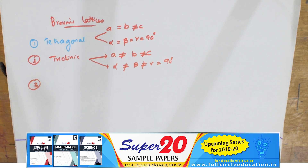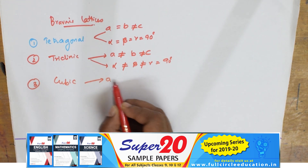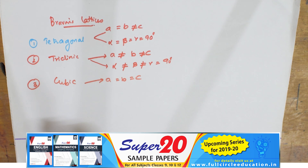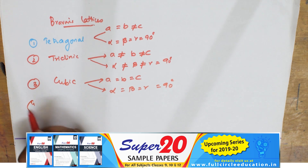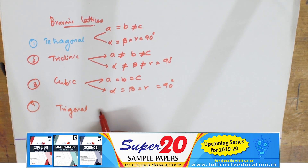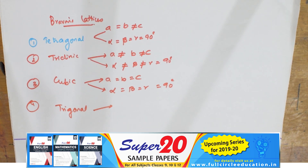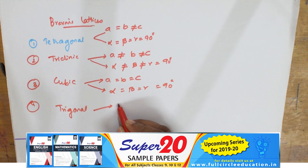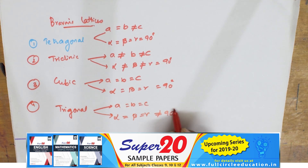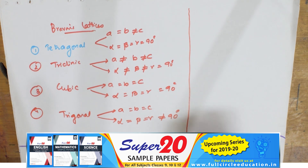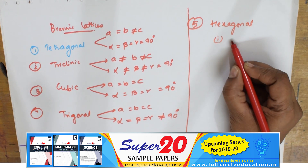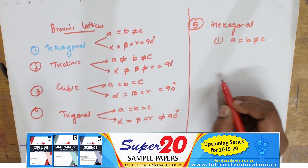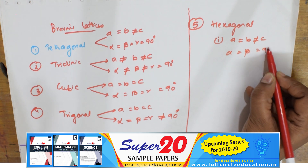In trigonal crystal systems, a = b = c, and alpha = beta = gamma ≠ 90°. In hexagonal, a = b ≠ c, with alpha = beta = 90° and gamma = 120°.